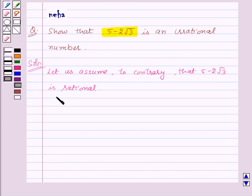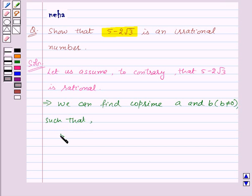Now if 5 minus 2 root 3 is rational, then we can find co-prime numbers a and b where b is not equal to 0, such that 5 minus 2 root 3 is equal to a upon b.